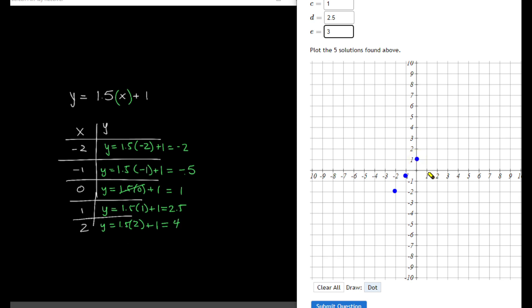When x is 1, y is 2.5. And again, just estimate that the best you can. And then the last one is going to be when x is 2, y is 4. You notice that all of these have formed a line, and that's what you're looking for, and that's going to be how you know you've done this entire question correct.